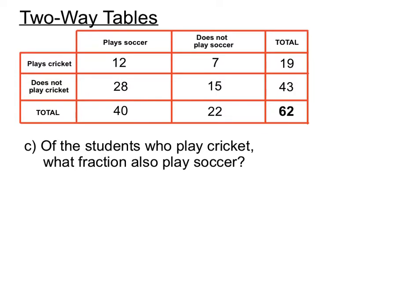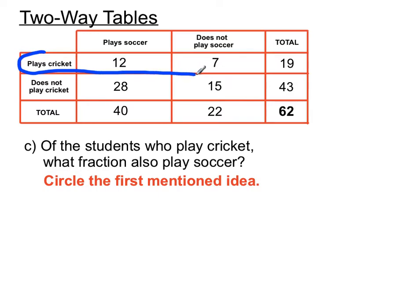Now I'll show you a special technique for these types of questions. 'Of the students who play cricket, what fraction also plays soccer?' It's not talking about all the students, only a certain section. The first thing to do is circle the first mentioned idea — the students who play cricket — because they're the only students we're considering in this part of the question.